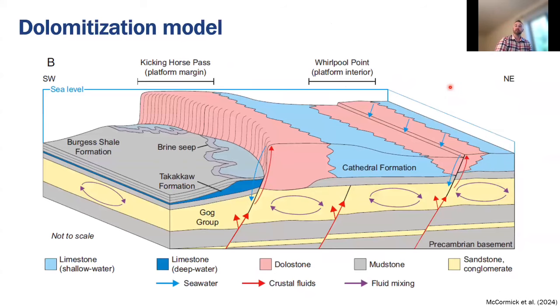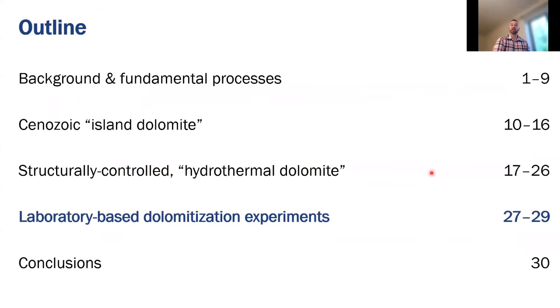So based on all the different field petrographical and geochemical data that we collected we came to this dolomitization model for these types of systems. Based on trace and rare earth element geochemistry we suggested that seawater and hydrothermal fluids convected within the underlying siliciclastic rocks before migrating upwards along normal and trans-tensional faults to dolomitize the carbonate platform. In these papers we also provided a framework for how to interpret the proximity of your succession to the source of the dolomitizing fluid which may be of interest to many of you watching this presentation.